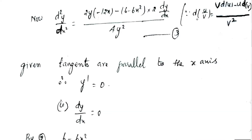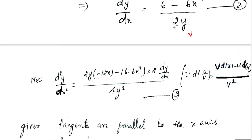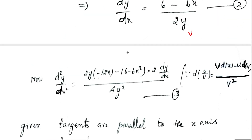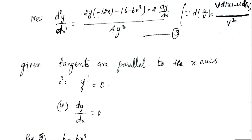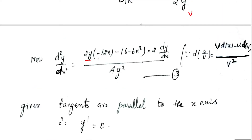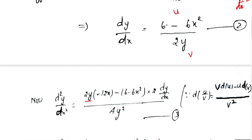We will use the u/v (quotient) formula. The derivative of u/v equals (v·du - u·dv) / v². So the denominator is v² = (2y)², and the numerator is 2y times the differential of u, where u = 6 - 6x².